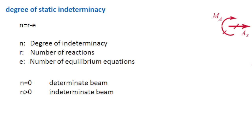We can define a number called the degree of indeterminacy, which is the number of reactions minus three. If we have four reactions, the degree of indeterminacy would be one. If we have five reactions, the degree of indeterminacy would be two, and so forth.